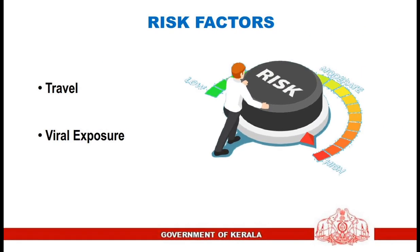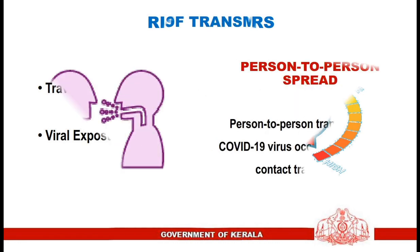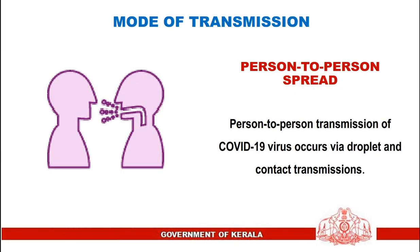The risk factors are travel and viral exposure. Mode of transmission: person-to-person spread. Person-to-person transmission of COVID-19 virus occurs via droplet and contact transmissions.